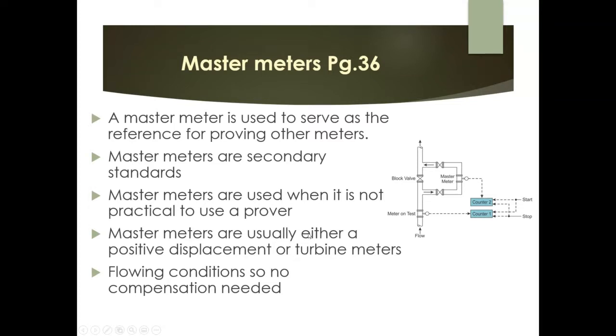Gas provers include four types: bell provers, master meters, sonic nozzles, and tank provers — two of which are the same as the liquid prover types, and two are different.